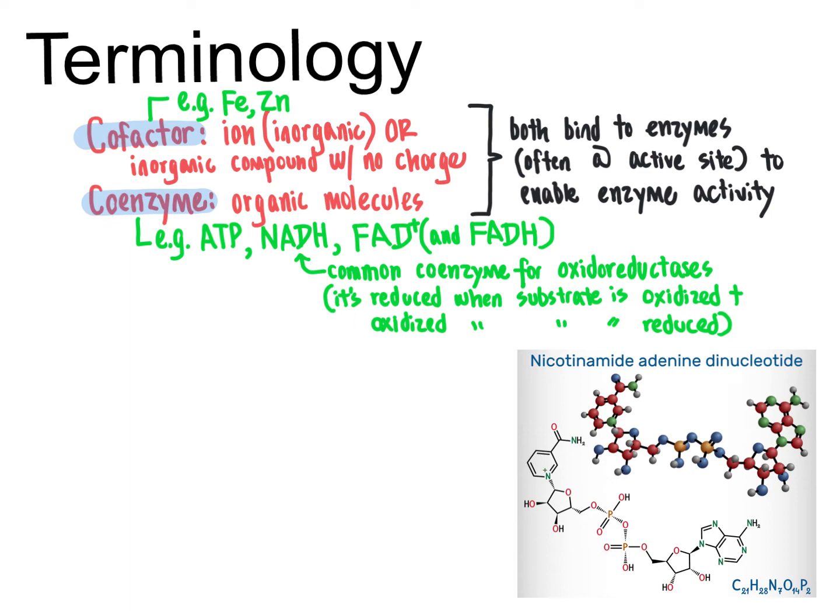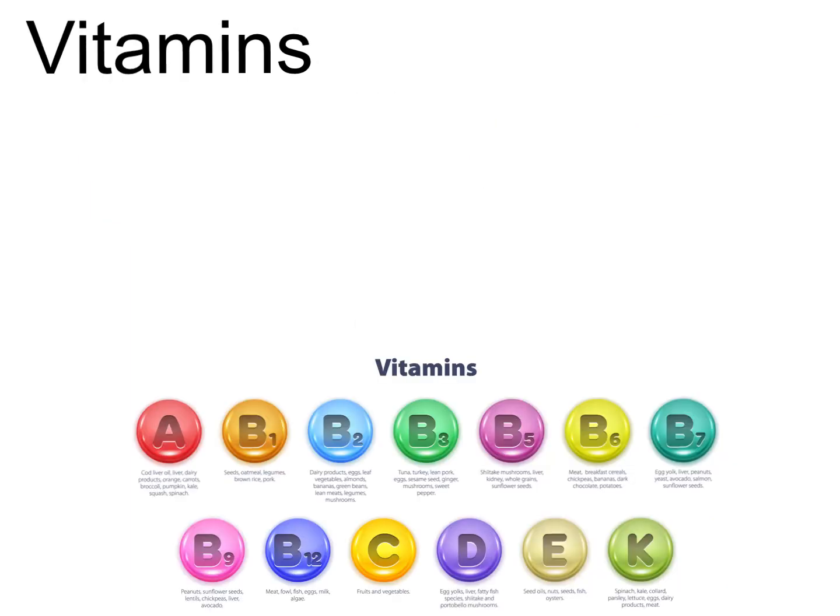So how does the topic of cofactors and coenzymes relate to vitamins and minerals? Well, in the case of minerals such as iron, zinc, cobalt, and others that can be taken as supplements, we recognize that those are used as cofactors for enzymes. Hence, it is necessary to obtain a certain level of those via the diet or via supplements. In the case of vitamins, such as the ones listed here and some of their sources, vitamins are organic molecules that are required for normal health and normal growth.